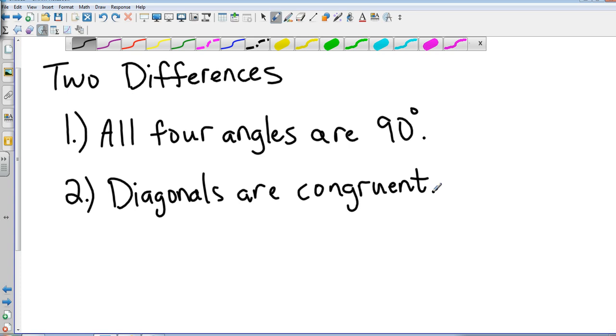Two main differences between parallelograms and rectangles. We'll keep all the same traits from before, but we'll create some separate shapes with these two laws. Again, all four angles are 90 degrees and diagonals are congruent. So let's look at some examples.